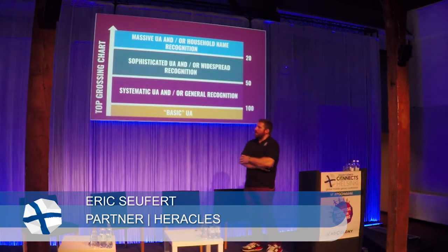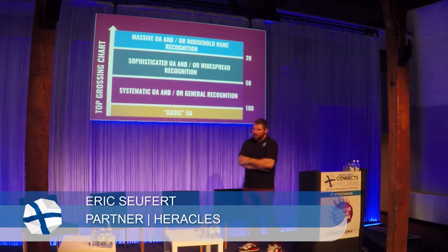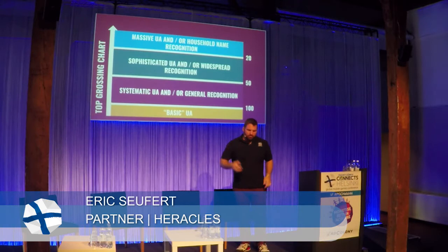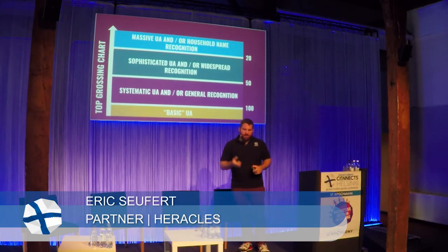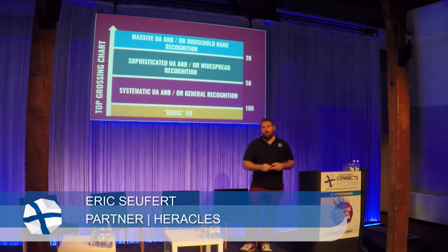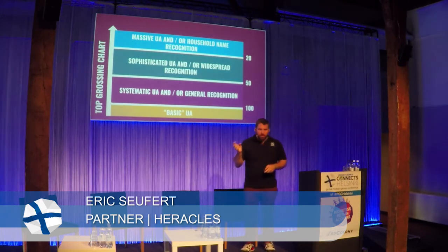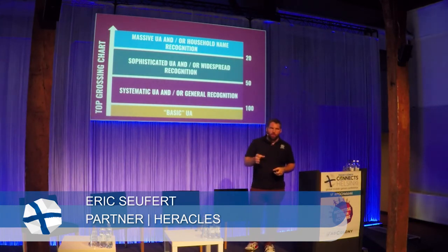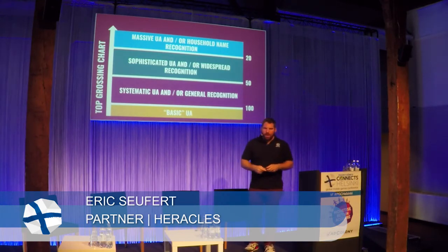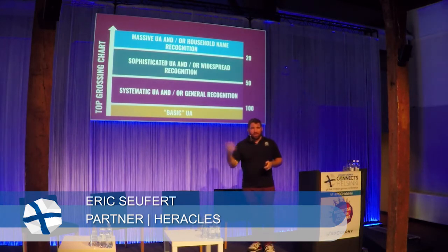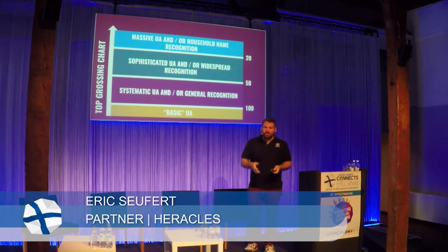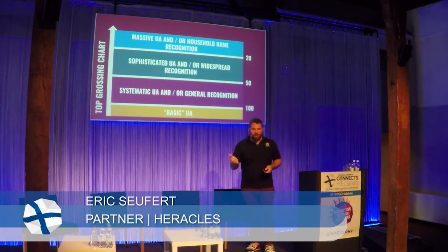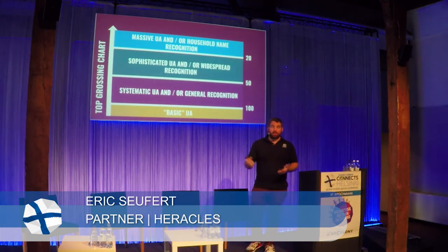From my vantage point of working with developers across the size spectrum, I think you can hit top 100 grossing with just basic UA. When I say basic UA, I mean maybe one or two people covering the big key networks. You're not doing every single affiliate or agency — you're covering the four or five large networks that have big volume. A lot of it is just pulling data from network interfaces and putting it together in Excel. If the game is good and has strong retention and actually monetizes, you can incrementally grow it to top 100 grossing with just basic UA.